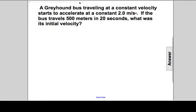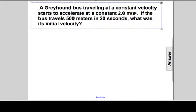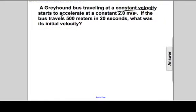In this problem there's a bus that initially starts off traveling at a constant velocity. It won't maintain that constant velocity because at that point it begins to accelerate at a constant rate of 2 meters per second squared.